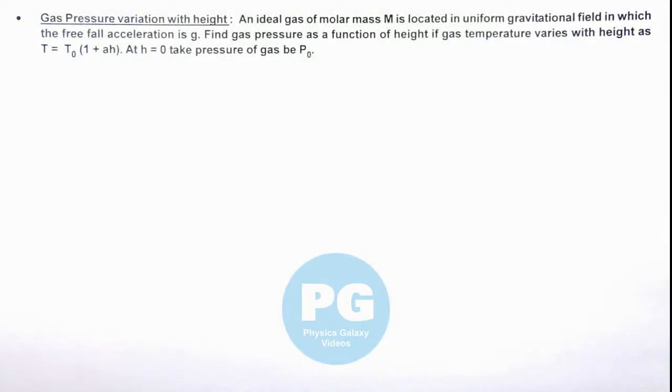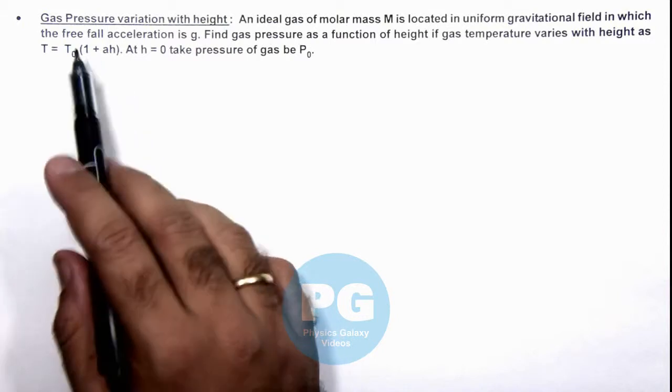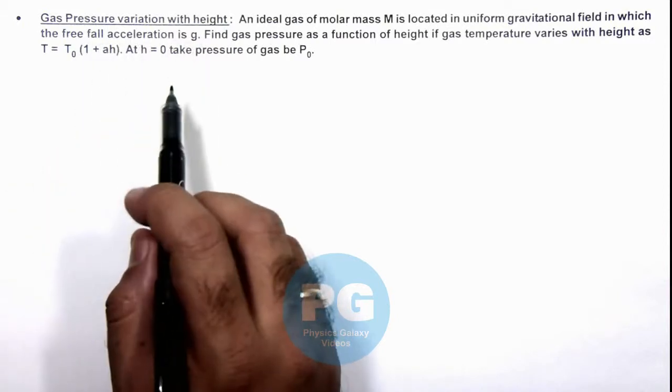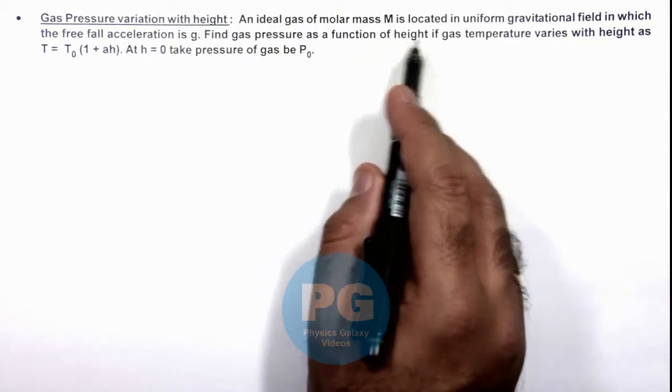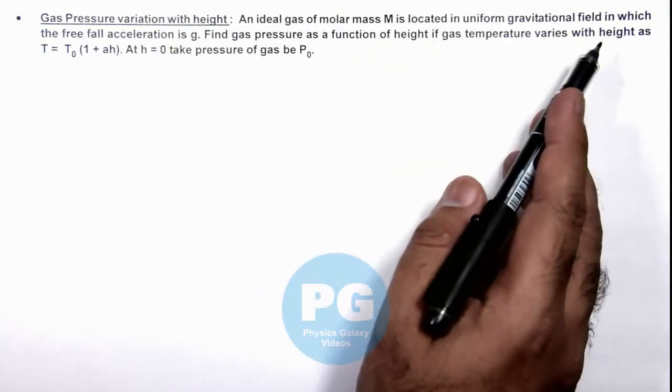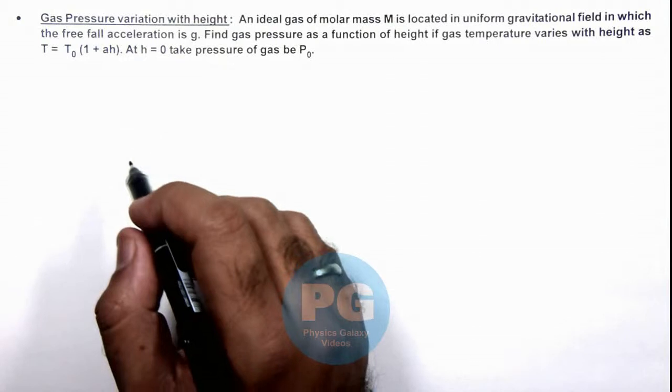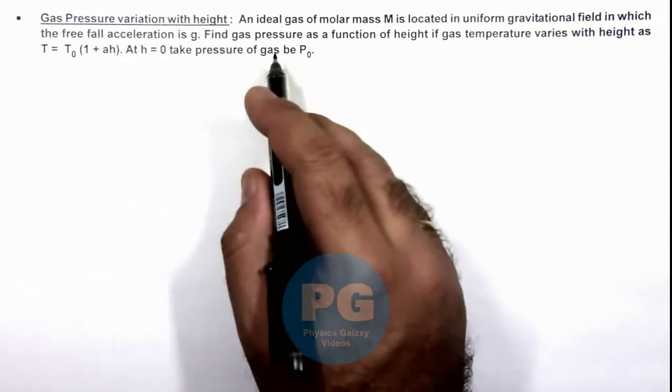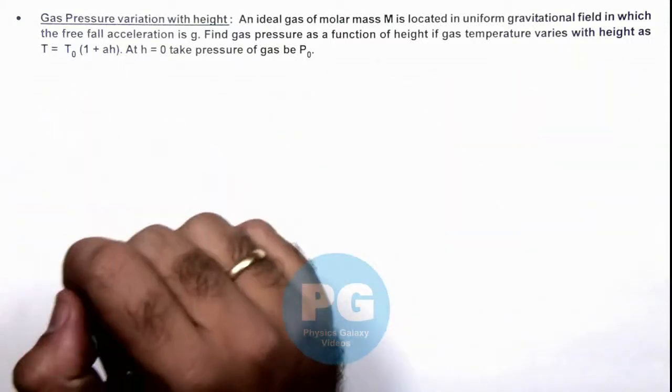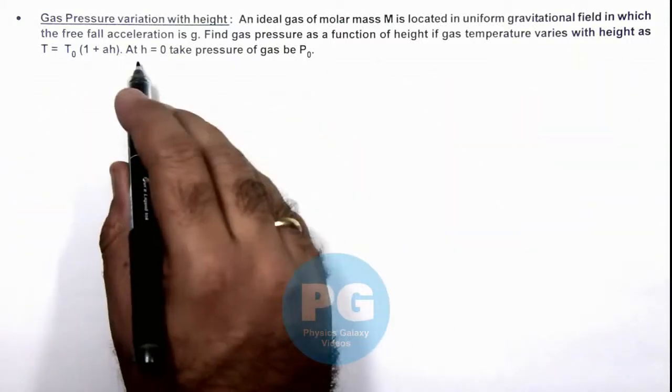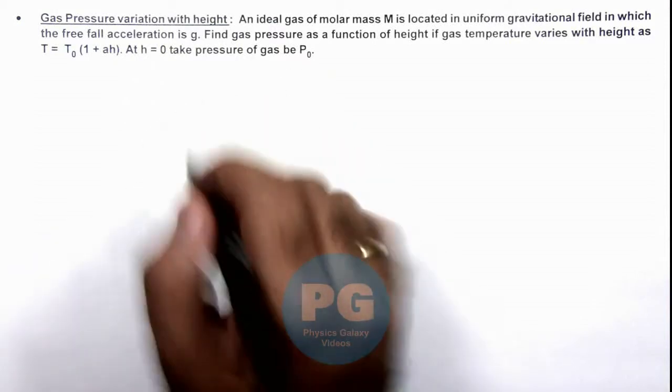In this illustration we'll discuss the variation of gas pressure with height. We are given that an ideal gas of molar mass M is located in a uniform gravitational field where free fall acceleration is g. We are required to find the pressure of gas as a function of height if temperature varies with height as T₀(1 + αh), and given that at h = 0 pressure of gas is P₀.